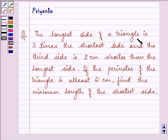The longest side of a triangle is three times the shortest side and the third side is two centimeters shorter than the longest side. If the perimeter of the triangle is at least 61 centimeters, find the minimum length of the shortest side.